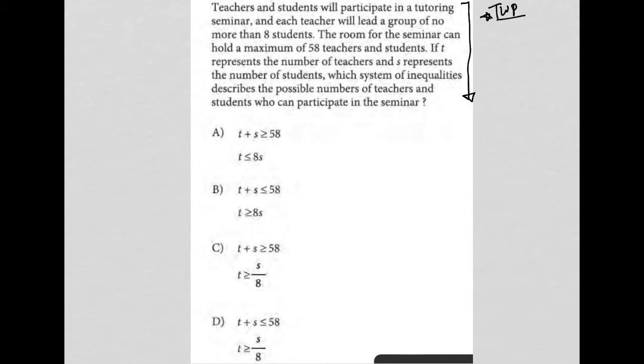I take a glance at the answer choices. I have a habit of doing that, especially for translate word problem questions. So I see that I have some variables here, T and S, and it looks like the numbers that are important for me are 58 and 8. All of the answers have some combination of T, S, 58, and 8. So I already know what my universe of information is going to be here.